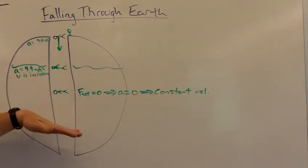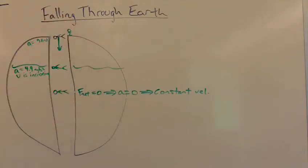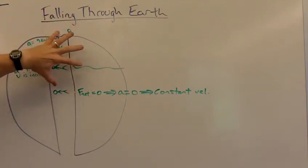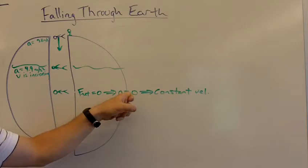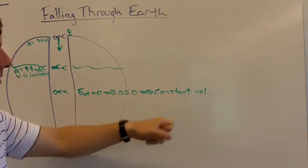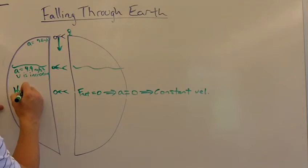Now that only happens for an instant. Because as soon as you pass through the center of Earth, you're going to have a net force pulling you in the upward direction because more of Earth's mass will be above you pulling you up. But just for that instant, you have a net force on you of zero, therefore your acceleration is going to be zero, and therefore you have a constant velocity. So you reach your highest V here, right as you pass through the center of the Earth.